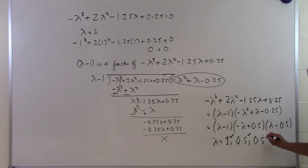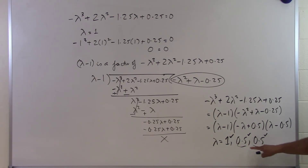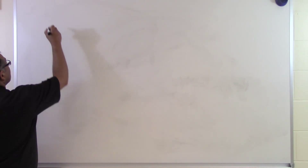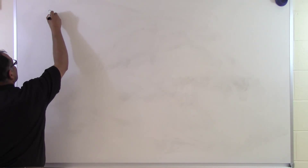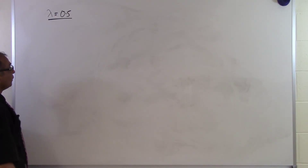The three eigenvalues are 1, 0.5, and 0.5. But these two eigenvalues of 0.5 are not distinct — they are the same. We have to figure out how we can find the eigenvectors corresponding to the case when we don't have distinct eigenvalues. So let's look at how to find eigenvectors corresponding to lambda equal to 0.5, which is a repeated eigenvalue.